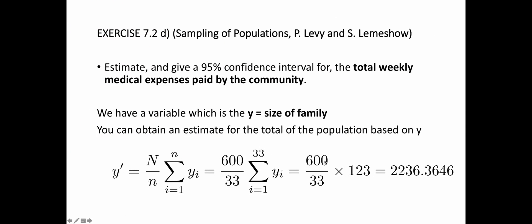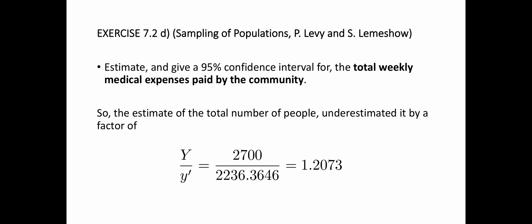How do we use the ratio estimator? Well, this estimate for the total size of the population underestimated the total of the population, right? Because we know the total number of individuals is 2,700, and the estimate that you get from the sample is in this case lower, by a factor of 1.20. It's 20% lower than the true estimator.